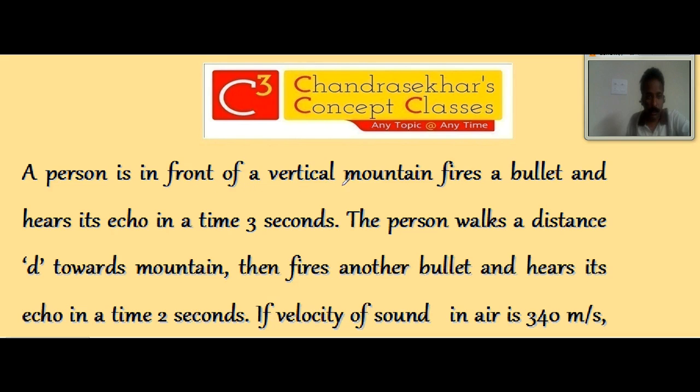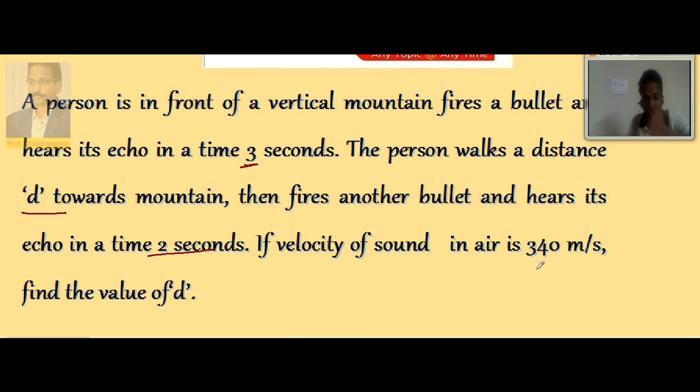A person is in front of a vertical mountain, fires a bullet and hears its echo in a time of 3 seconds. The person walks a distance 'd' towards the mountain, then fires another bullet and hears its echo in a time of 2 seconds. If velocity of sound in air is 340 m/s, find the value of d.